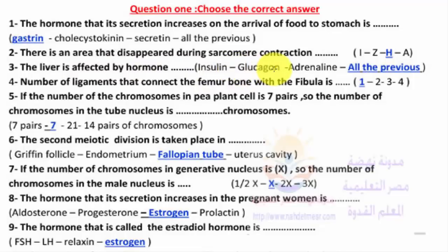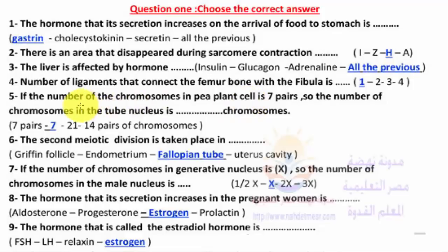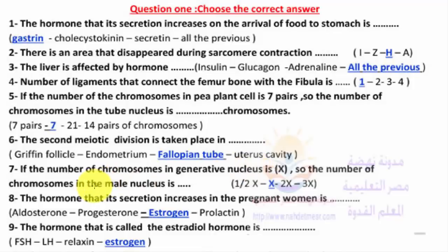The number of ligaments that connect the femur bone with the fibula is 1. The number of chromosomes in a plant cell is 7 pairs, so the number of chromosomes in the tube nucleus is also 7. If the number of chromosomes in the generative nucleus is X, then the number of chromosomes in the main nucleus is also X.